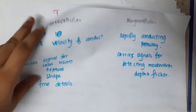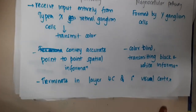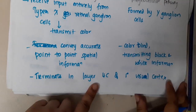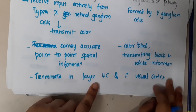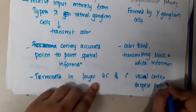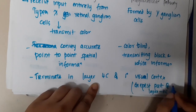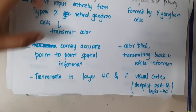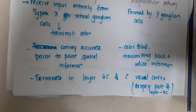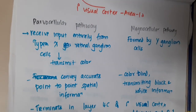Both magnocellular and parvocellular pathways terminate in layer 4C of the primary visual cortex, with the magnocellular pathway terminating in the deepest part of layer 4C. This completes the visual pathway. Thank you for watching.